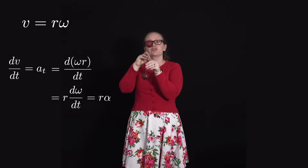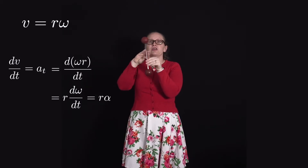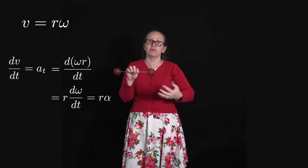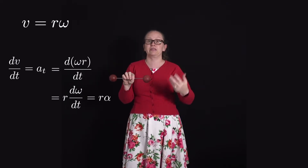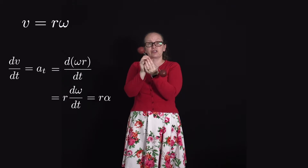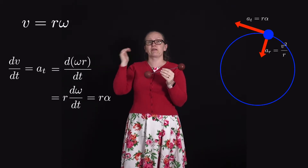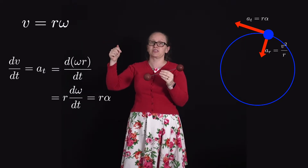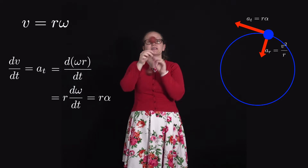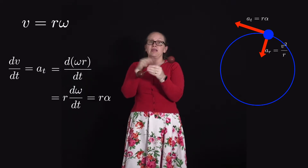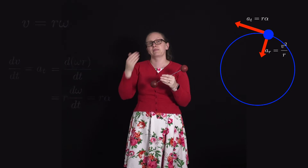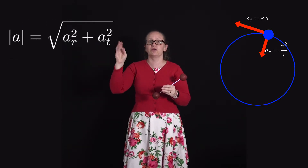For uniform circular motion, omega is not changing, so alpha (the angular acceleration) is zero, meaning there is no tangential acceleration — only the radial acceleration v²/r. But if something is speeding up, it does have a tangential component. So we have two types of acceleration at right angles to each other: radial (directed towards the centre) and tangential (tangent to the circle). To find the total acceleration, we add them using Pythagoras: the magnitude equals √(a_tangential² + a_radial²).